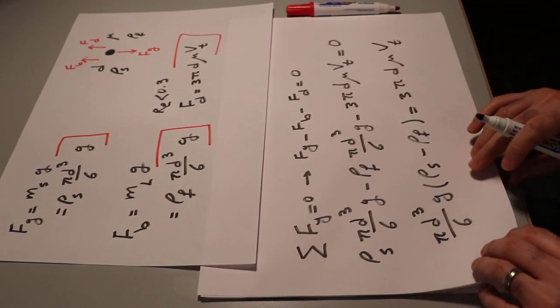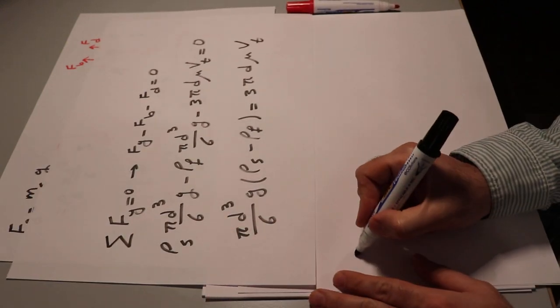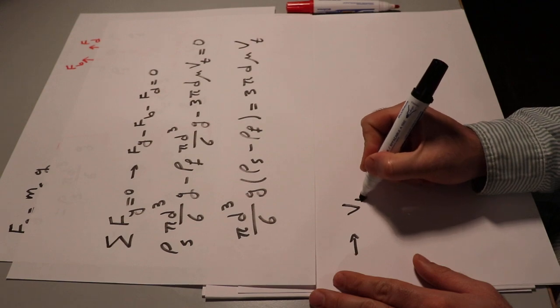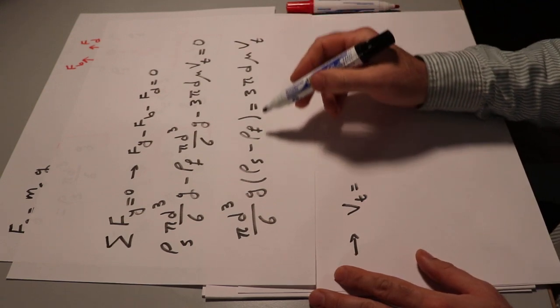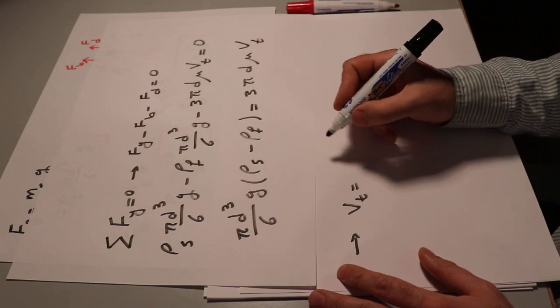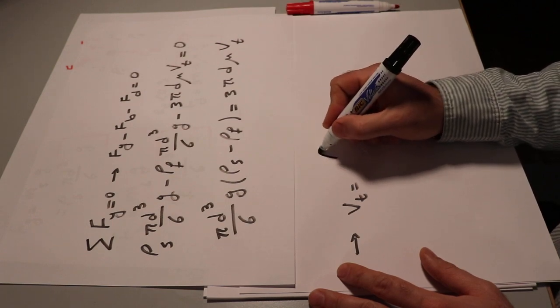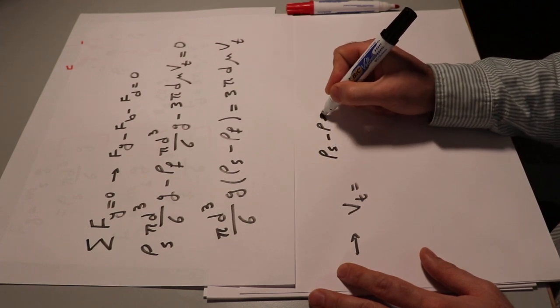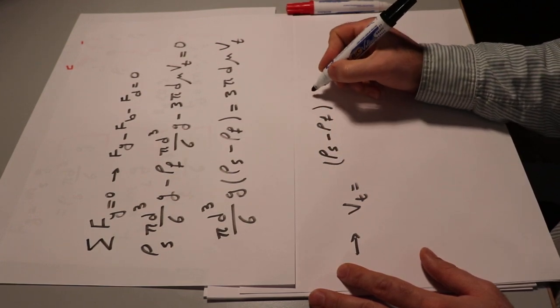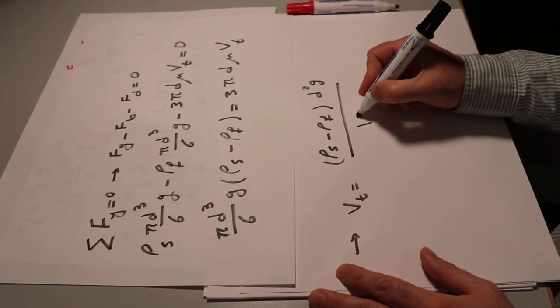So from this equation, you can simply conclude that Vt will be equal to, so you can divide everything by this coefficient, by the coefficient of 3 pi d mu, and the result will be equal to rho s minus rho f times d squared g divided by 18 mu.